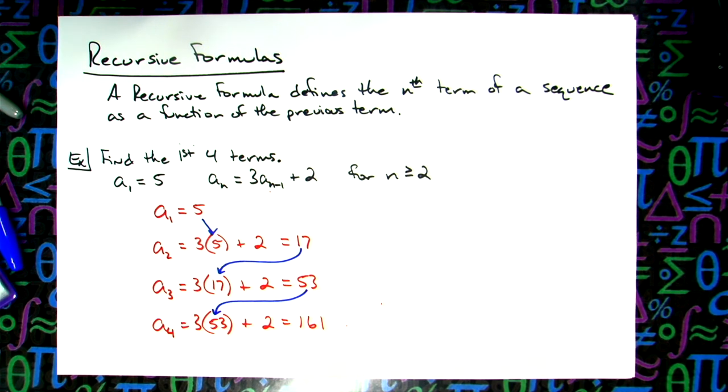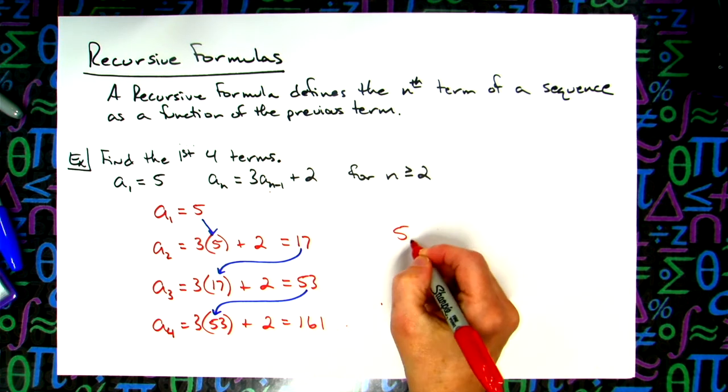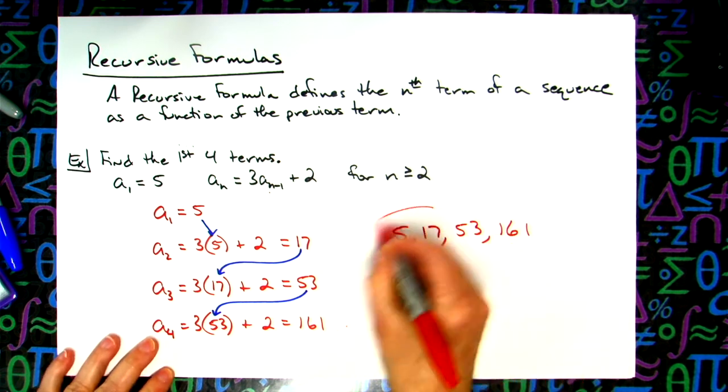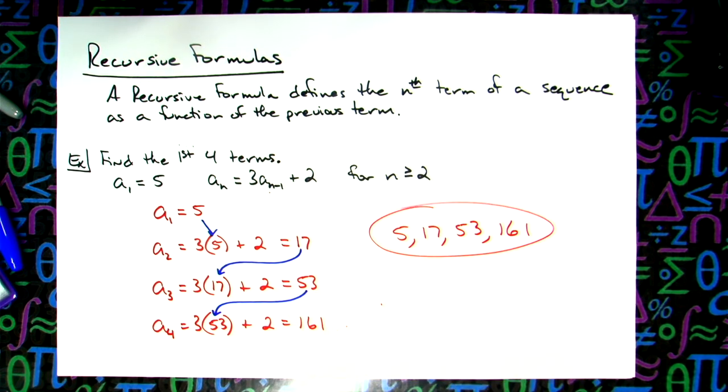All right, so again, I probably would not leave this as my answer. Probably in Math Excel, you're probably going to have to list them all with commas in between them. So 5 is the first one, and then a 17, and then a 53, and then a 161. So there's the first four terms of that recursive formula, and it's called recursive because you had to use the previous number to generate the next one.